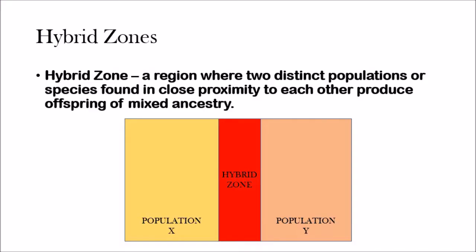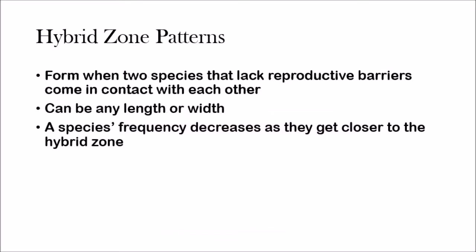A hybrid zone is a region where two distinct populations or species found in close proximity to each other reproduce and start to form this mixed ancestry. So we have a diagram here — there'd be population X, population Y, and they're very close to each other and they start reproducing and they create this interesting zone called a hybrid zone. They tend to form when two species lack reproductive barriers and they come in contact with each other.